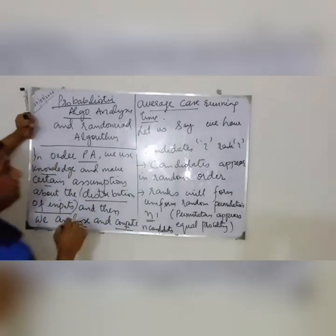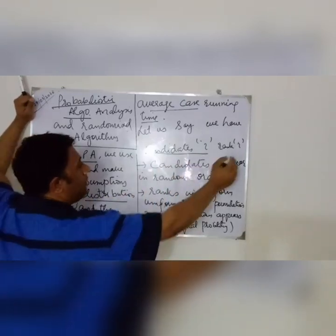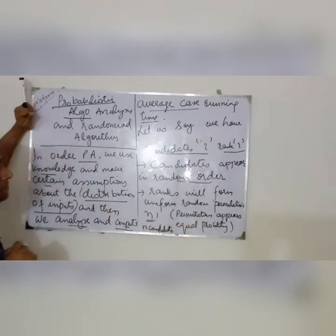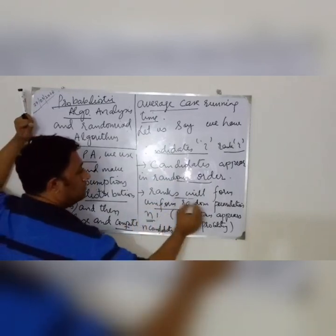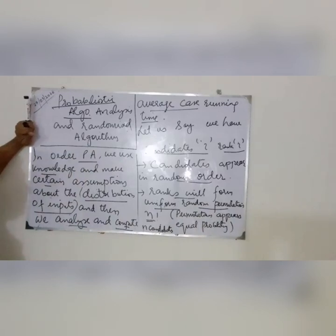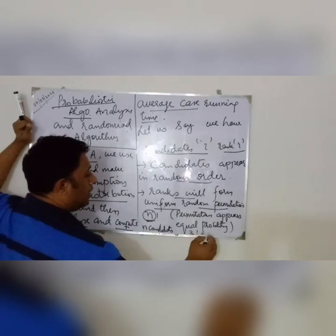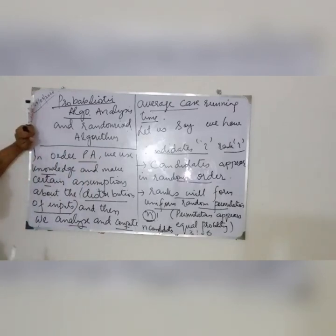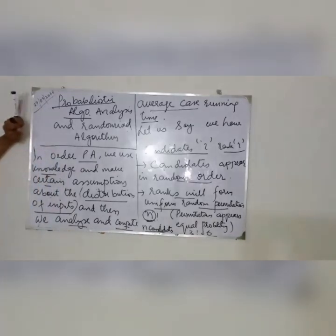Let us say we have candidate I and rank I. Candidates appear in random order, ranks will form uniform random permutations. What is it saying? It says that I have n number of candidates. The permutations appear in equal probability. Let us say if I have three candidates, then I will have three factorial. That's going to be six, so that's going to be the permutations. On my three candidates, this much probability is going to occur.